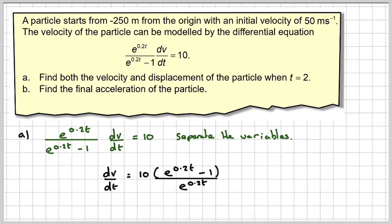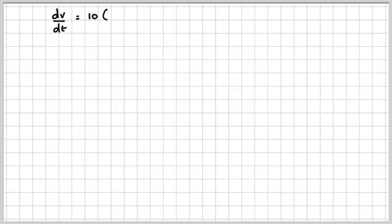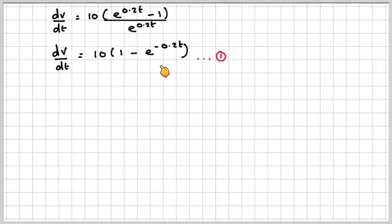What we should note here is now we have the acceleration. Writing that out again, before we can integrate, we need to divide this one here by itself. So this will become 1 and then this will become minus 1 over e to the 0.2t, which is e to the minus 0.2t. We're going to call that equation 1 because we're going to refer to it later.